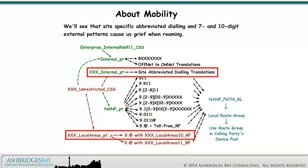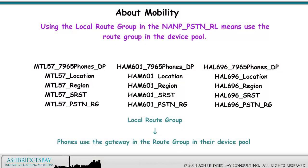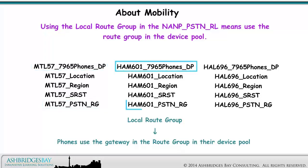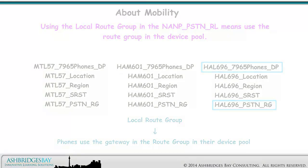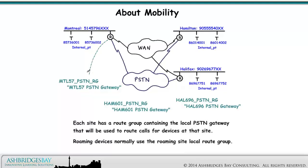We will see that site-specific abbreviated dialing and 7 and 10-digit external patterns cause us grief when roaming. Using the local route group in the NANP PSTN route list means: use the route group in the device pool. Phones in Montreal use the Montreal 57 PSTN route group; phones in Hamilton use the Hamilton 601 PSTN route group; phones in Halifax use the Halifax 696 PSTN route group. Each site has a route group containing the local PSTN gateway for devices at that site. Roaming devices normally use the roaming site local route group.